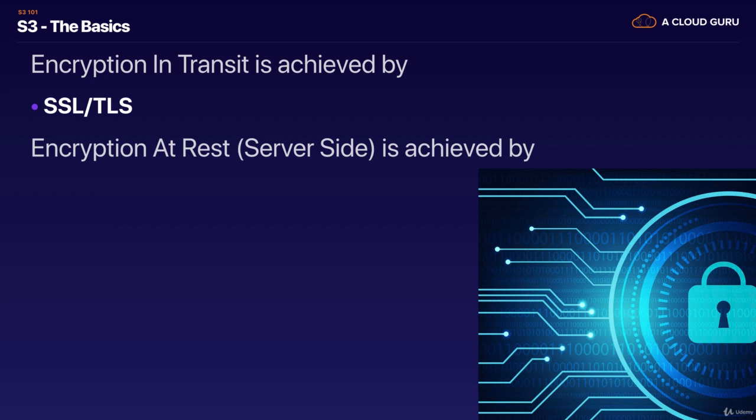Encryption at rest is where we encrypt the data that's being stored. Let's say we have a Word document being stored on a hard disk drive. If there's no encryption at rest and somebody steals that hard disk drive, they will be able to access that Word document. In terms of the way it works with S3, there are two different ways. We can do it on the server side, or we can do it on the client side. The server side is where Amazon helps you encrypt the object, and on the client side it's where you encrypt the object and then upload it to S3.